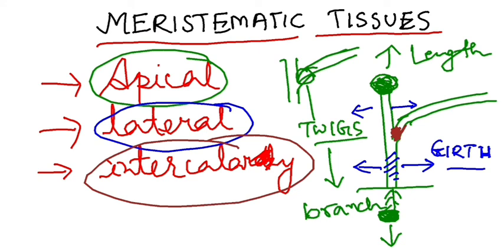Now, can you answer: which is the most active meristematic tissue? Also, are meristematic tissues living or dead? Obviously meristematic tissues are living, since they are dividing. Try to answer which of these three meristematic tissues is the most active. I'll upload the next concept tomorrow — till then, please read the textbooks and make the necessary notes.